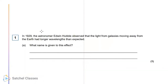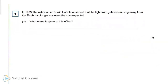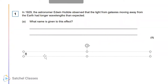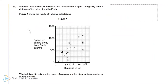Let's look at some questions. In 1929, the astronomer Edwin Hubble observed that light from galaxies moving away from the earth had longer wavelengths than expected. What is the name given to this effect? We know now it's redshift. One mark, easy. From his observations, Hubble was able to calculate the speed of a galaxy and the distance of the galaxy from earth. It's very important - always read the question carefully. Sometimes anyone can make the mistake of answering the wrong question.